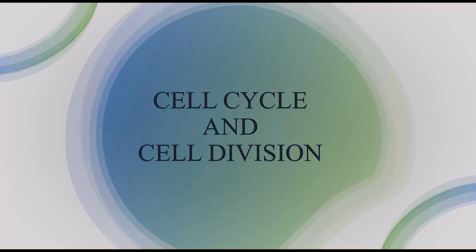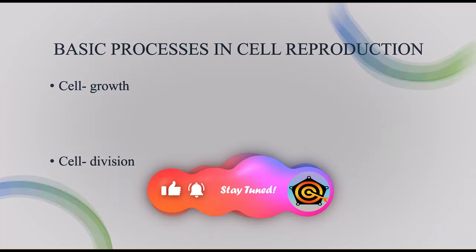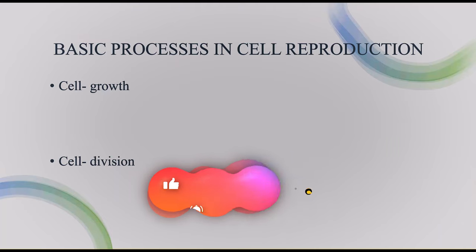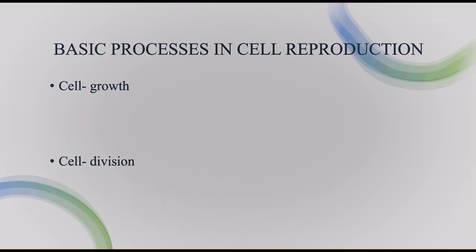Hi to everybody. Today let's discuss about cell cycle and division. Before entering into the topic, let's know about some basic things. The very important characteristic of living organisms is continuity of life. This continuity of life can be achieved with a process called reproduction. Reproduction is a very important thing for living organisms.